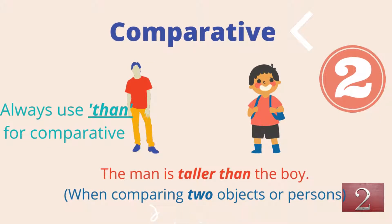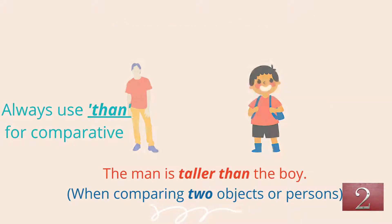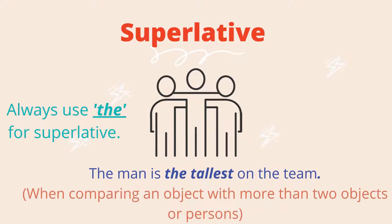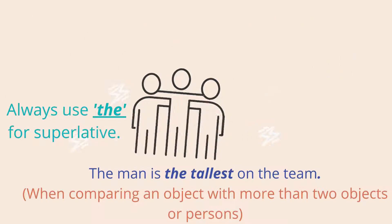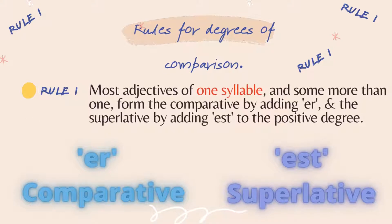Here I am comparing a man and a boy to see who is tall, so it falls under the comparative category. As I am comparing only two people, I say the man is taller than the boy. Always use 'than' for comparative. Here I am comparing the man with all his team members. When comparing more than two objects or persons, it falls under the superlative category, so I say the man is the tallest on the team. Use 'the' before the superlative word.